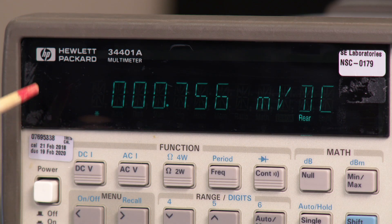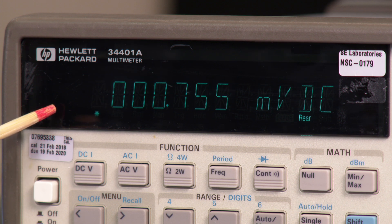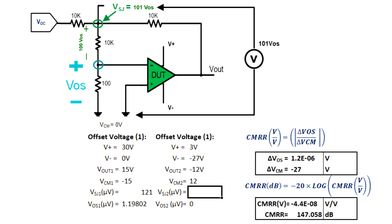In this condition, the output voltage of the digital multimeter is approximately 769 microvolts. Entering that into our spreadsheet, we see that the offset voltage of the amplifier is approximately 7.6 microvolts. Therefore, the common mode rejection ratio of the amplifier is approximately 132 dB.